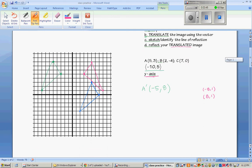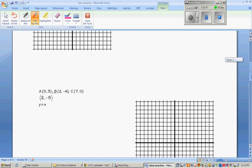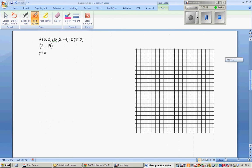So why don't we try this next one. Get the image, the original one, written. And then try translating it. Hit pause and try and get that done. And then draw in the line y equals x. See if you remember what that looks like.